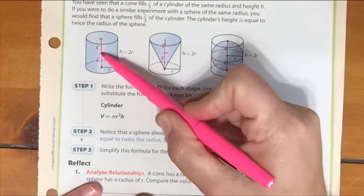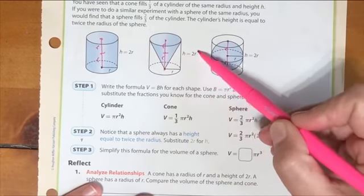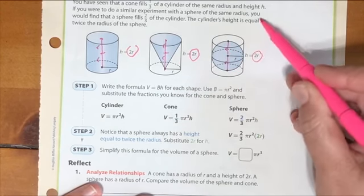A cone, twice as tall, right? So the height is basically two radiuses stacked up. So those are the heights. The heights are the same, and our radiuses are the same.